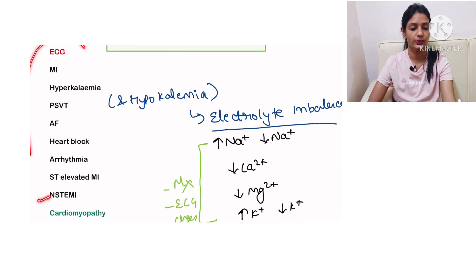Then in hyperkalemia and hypokalemia they can ask you electrolyte imbalance—hypernatremia, hyponatremia, hyperkalemia, hypokalemia—their management and the ECG changes.